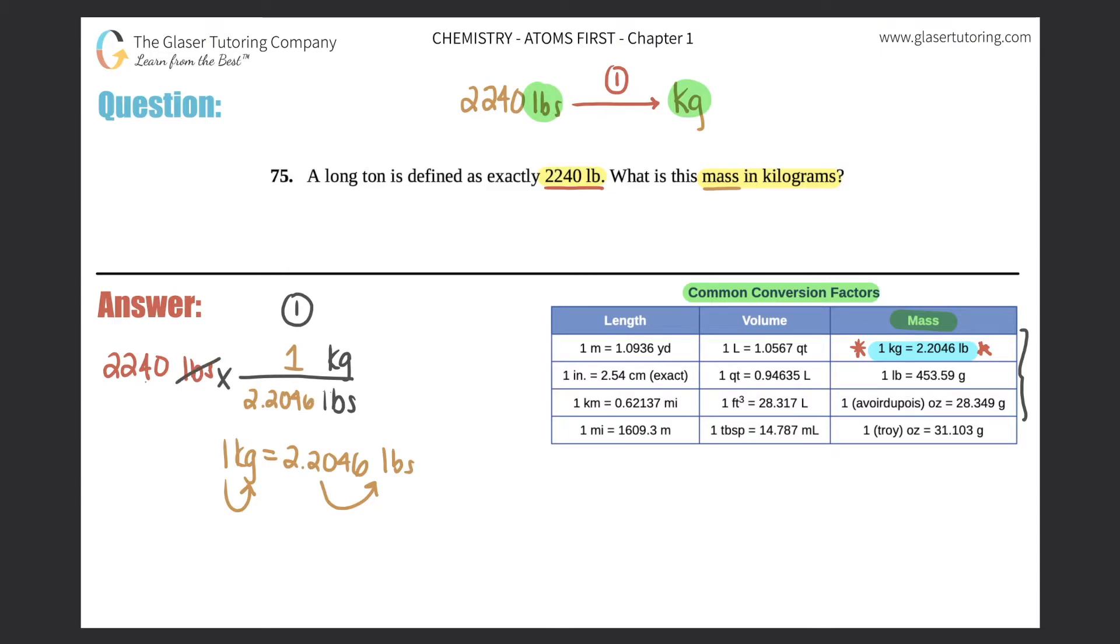Now the words pounds will cancel out, and we just simplify. Remember, you simplify the numerator, simplify the denominator, and then you do your division. So 2,240 times one is just 2,240 divided by 2.2046. In my calculator, I'm going to do 2,240 divided by 2.2046, and I get a long trailing decimal. I get 1016.057.